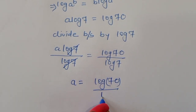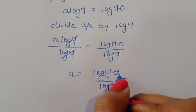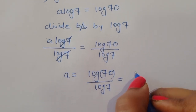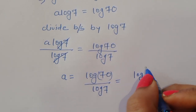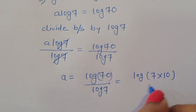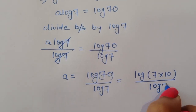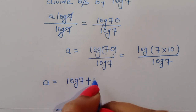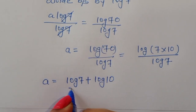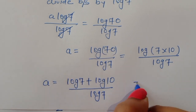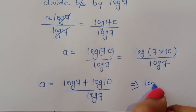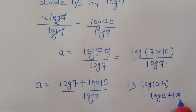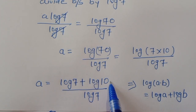We can write log of 70 as log of 7 times 10, divided by log of 7. Now using the formula log of A times B is equal to log of A plus log of B, this becomes log of 7 plus log of 10, divided by log of 7.